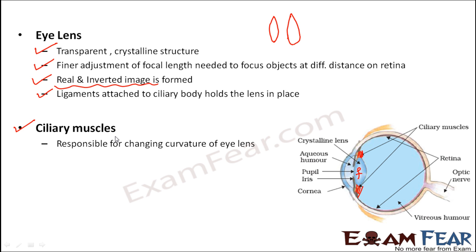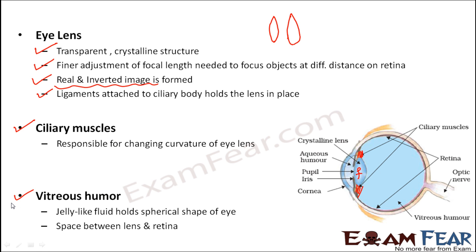Whether the lens is going to be thinner or thicker is determined by the ciliary muscles. Next is the vitreous humor, a jelly-like fluid structure that fills the entire space between the lens and the retina. It has low water content but fills this entire space, helping to maintain the spherical shape of the eye.